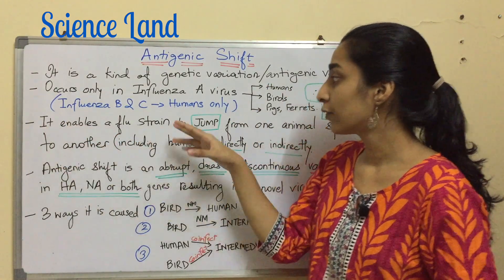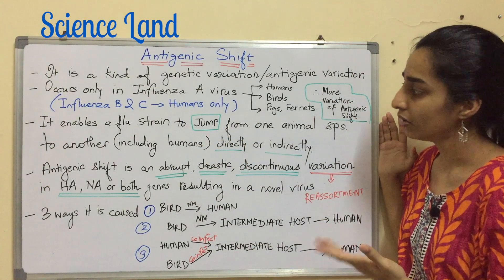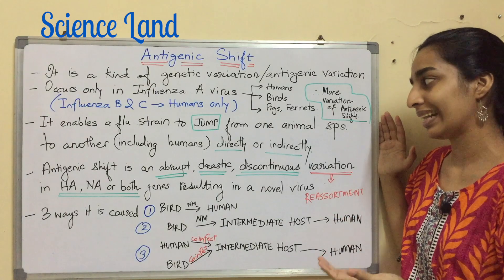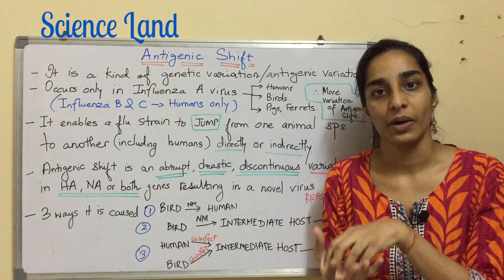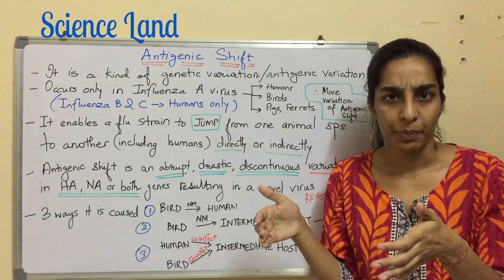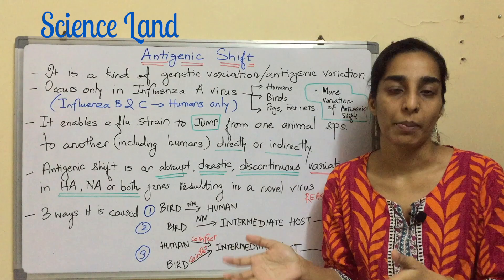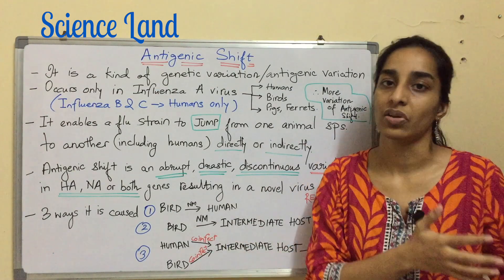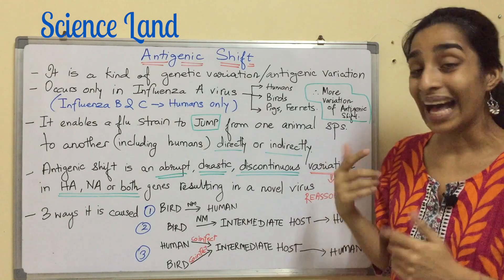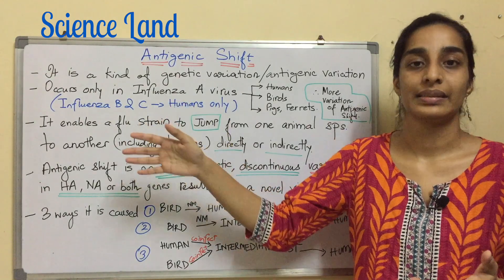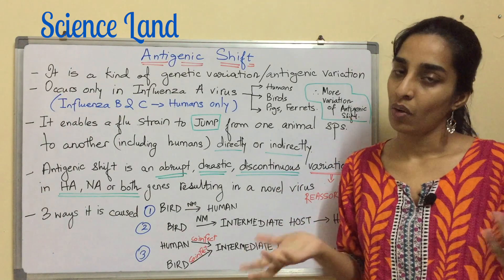Antigenic shift enables the flu strain to jump from one animal species to another — directly or indirectly. So what happens is influenza A virus from one population, let's say it has infected a bird, will jump to another animal population like pig or maybe human. The flu strain can jump either directly or indirectly.